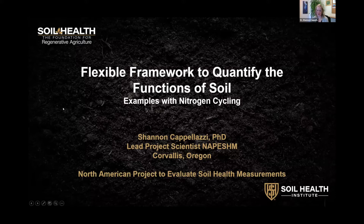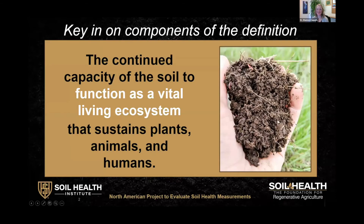If you've ever heard me talk about soil health, you know that I need to start with the definition. Soil health is the continued capacity of the soil to function as a vital living ecosystem that sustains plants, animals, and humans. I always start here because it really guides my thinking as we're working on these evaluations. I use this to ask: what measurements do we need to quantify the soil's capacity? How do these indicators interact to tell us something about function? And how can we use these measurements to help people make decisions about adoption of soil health management practices?